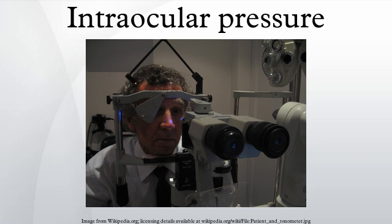Significance: Ocular hypertension is the most important risk factor for glaucoma. Intraocular pressure has been measured as a secondary outcome in a systematic review comparing the effect of neuroprotective agents in slowing the progression of open-angle glaucoma. Differences in pressure between the two eyes are often clinically significant, and potentially associated with certain types of glaucoma, as well as uveitis or retinal detachment.